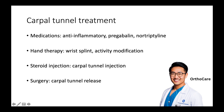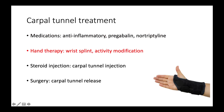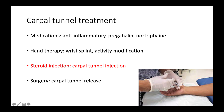Here are some treatment options for carpal tunnel syndrome. Medications such as anti-inflammatories can help reduce painful inflammation of the nerve. Other prescription medications like pregabalin and nortriptyline are specific to nerve irritation — these can cause drowsiness, so they are best taken before bed. Wrist splints help maintain a straight wrist position, lowering pressure within the carpal tunnel particularly during sleep. Reducing repetitive stress on the wrist, such as taking regular rest from typing and driving, can also help alleviate symptoms. Cortisone steroid injection can be placed into the carpal tunnel in the clinic; symptoms will improve over weeks to months, but frequently recur.